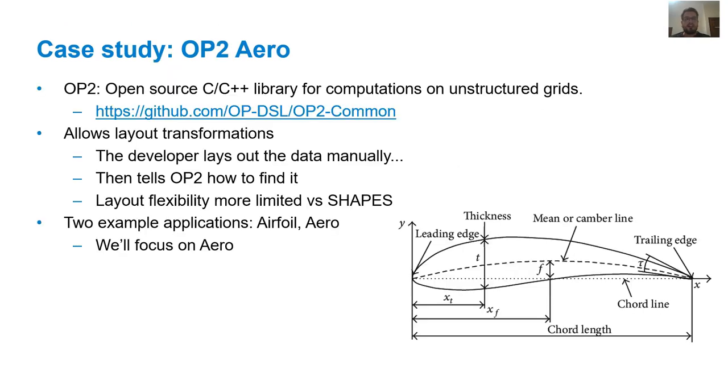The second case study compares our manual Shapes implementation against OP2, an open source library for performing computations on so-called unstructured grids. Unlike Shapes, in OP2, the developer must lay out the data manually and tell OP2 how to access it. Additionally, OP2 offers limited flexibility with respect to layouts compared to Shapes. The OP2 repository provides two example applications called Aero and Airfoil. We implemented these applications and used the layouts they already used in the original OP2 code, as well as an AOS and for Airfoil SOA layout.